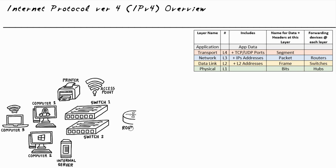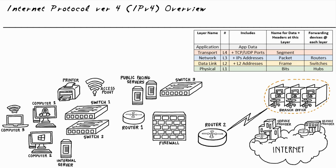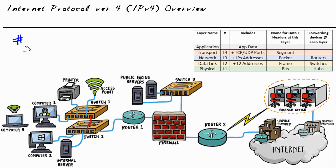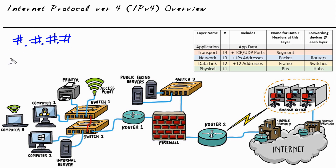Let's take a look at what an IP version 4 address looks like. There's going to be a number, a period, another number, a period, another number, a period, and another number — so it's four numbers separated by three periods. The range for each of these numbers could be between 0 and 255 at the max. If we saw an IP address, it could look something like this: 10.1.0.10. That's an example of an IP version 4 address.